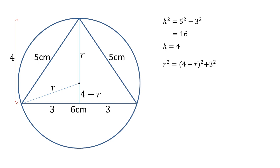So the hypotenuse R squared is equal to the squares of the other two sides, so 4 minus R all squared plus 3 squared.